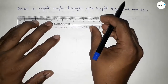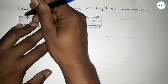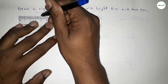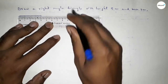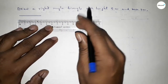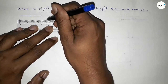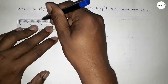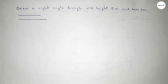First of all, we have to draw a line of length 4 centimeter. And drawing another line of length 5 centimeter — starting 0, 1, 2, 3, 4, 5 — so this side is 5 centimeter.